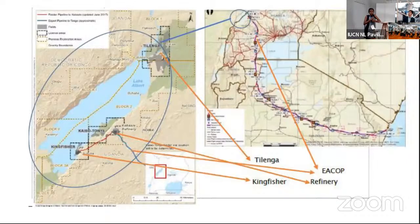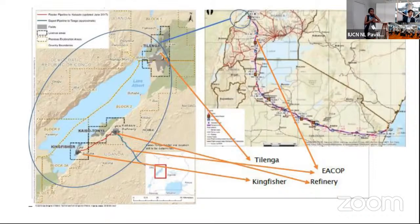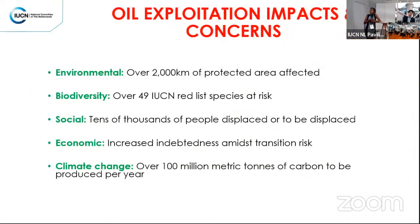The East African Crude Oil Pipeline, if constructed, will be the longest heated crude oil pipeline in the world at 1,443 kilometers. It is expected to transport 216,000 barrels of oil per day from the Tilenga and Kingfisher oil fields to the port of Tanga in Tanzania and onto export markets. The EACOP project is led by Total Energies in partnership with CNOOC and the Ugandan and Tanzanian governments.